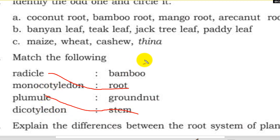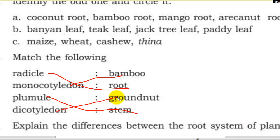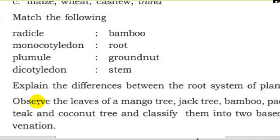Monocotyledon and dicotyledon. Bamboo — bamboo is an example of parallel venation. Fibrous root system. Monocotyledon — ground net is an example.